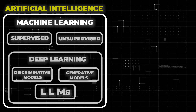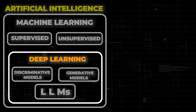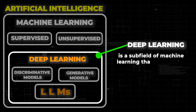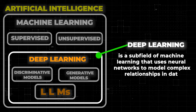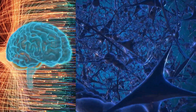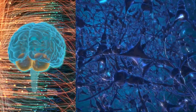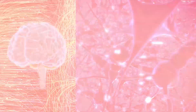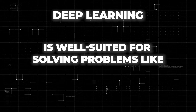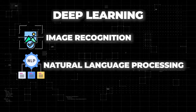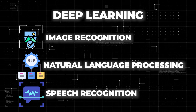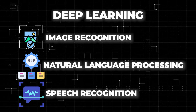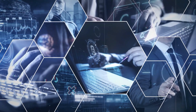Now that we have learned about machine learning, let's talk about deep learning. Deep learning is the hottest topic in machine learning right now. Deep learning is a subfield of machine learning that uses neural networks to model complex relationships in data. Neural networks are computer programs that are inspired by the way the brain works. They have multiple layers of processing, which allows them to extract higher-level features from data. Deep learning is well suited for solving problems like image recognition, natural language processing, and speech recognition. These tasks were very difficult for computers to do until the recent advances in deep learning. Now they're some of the most exciting applications of artificial intelligence.